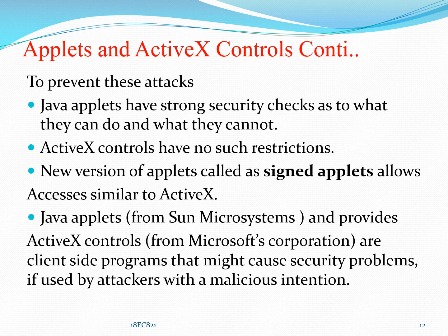Java Applets: to prevent security issues from applets and ActiveX controls, we can use Java applets. These applets have strong security checks as to what they can and cannot do. ActiveX controls have no such restrictions. Newer versions of applets are called signed applets, which allow access similar to ActiveX controls. Java applets and ActiveX controls are client-side programs that might cause security problems if used by attackers with malicious intention.